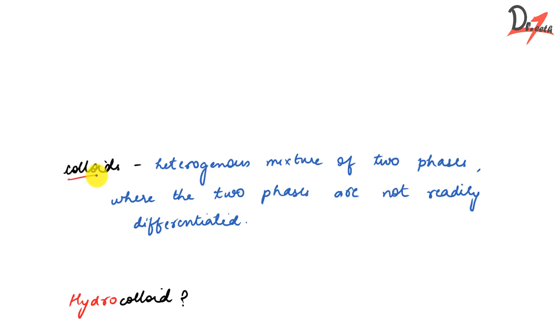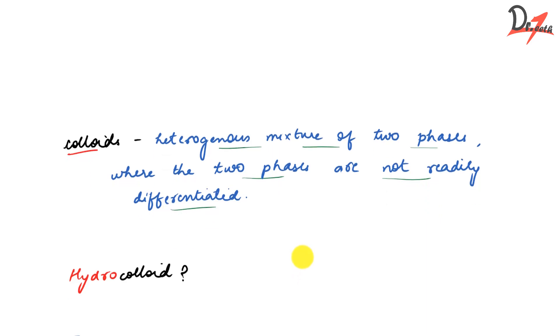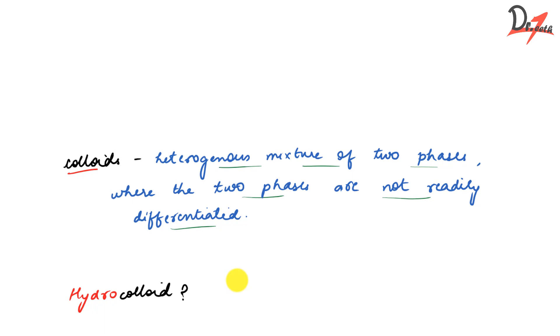Here in suspension, we could differentiate it because we could see it with our naked eye or with the help of microscope. But in colloid, they will not be able to do. So this thing comes somewhere in between the true solution and the suspension. It is neither a true solution because it still has particles and it is not even suspension because you cannot differentiate it. So a colloid is a heterogeneous mixture of two phases where the two phases are not readily differentiated. Now the question is, what is hydrocolloid? We are adding the term hydro to colloid and hydro means water.